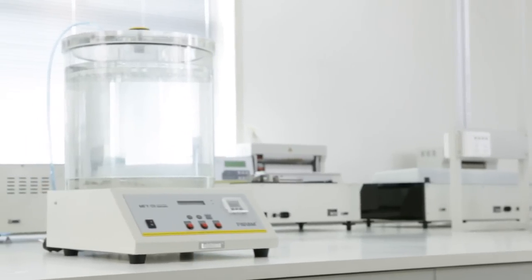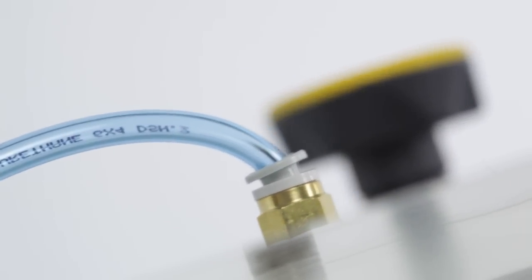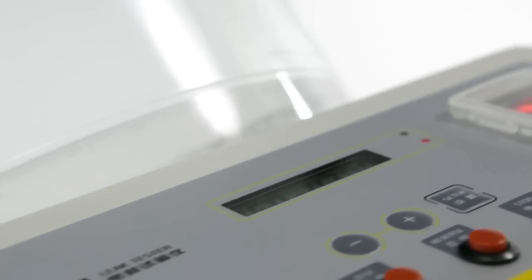MFY-01 is a leak detector that adopts the vacuum method. The detector utilizes compressed air and vacuum ejector to establish a precise degree of vacuum in the test chamber in a short time.